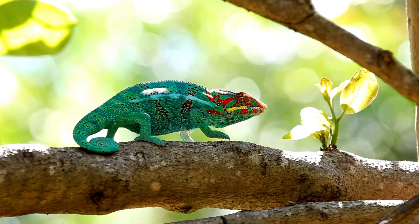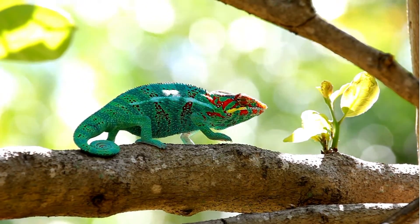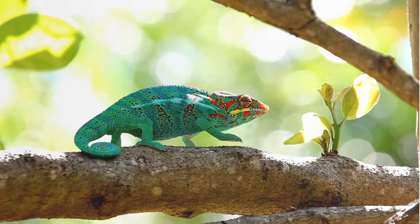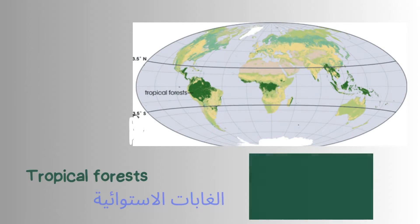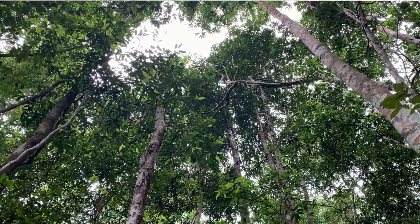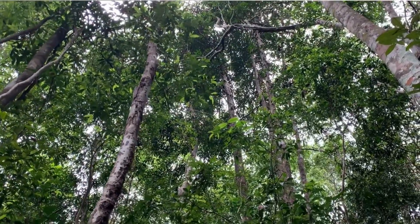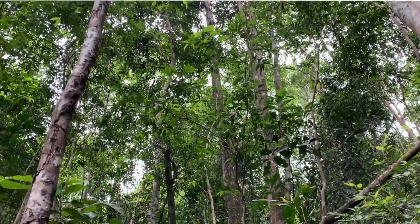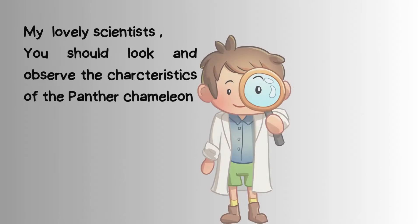If you want to know where the tropical forests are on Earth, we have here a map. The dark green parts are the tropical forests. So the Panther Chameleon's habitat is the tropical forest.